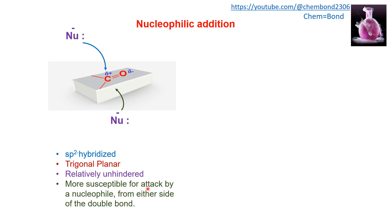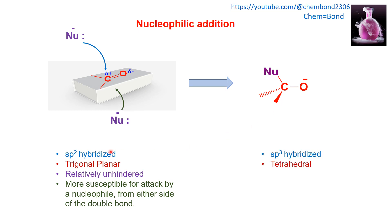Both sides are open for attack by a nucleophile. When the nucleophile attacks the carbonyl carbon, the product formed has sp3 hybridization — the sp2 hybridized carbon is converted to sp3. Accordingly, the geometry changes from trigonal planar in the carbonyl compound to tetrahedral in the resulting product.